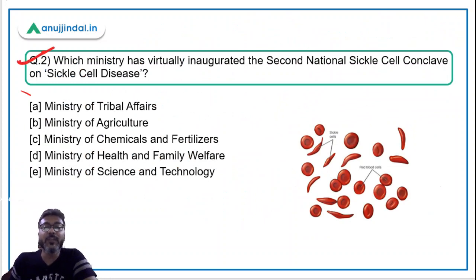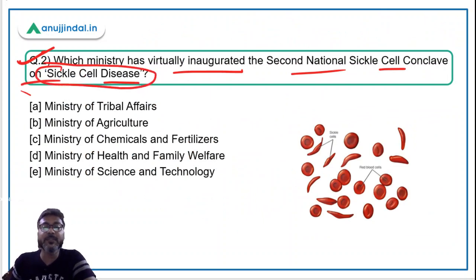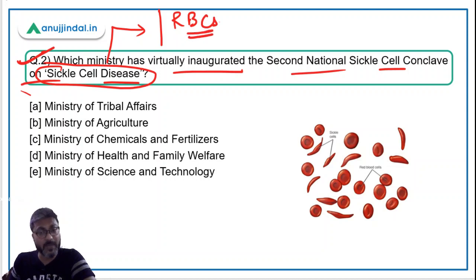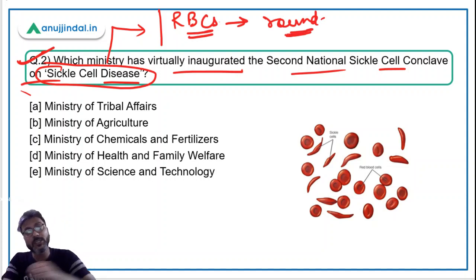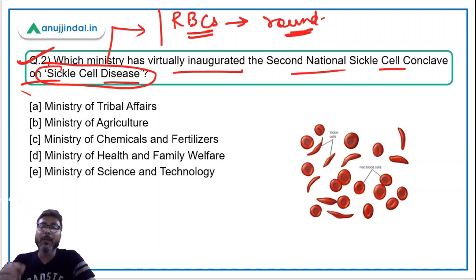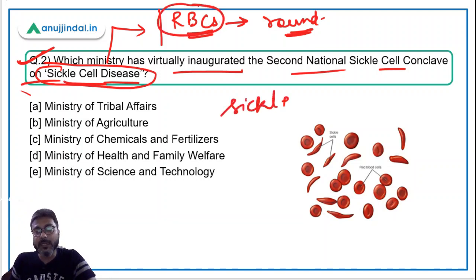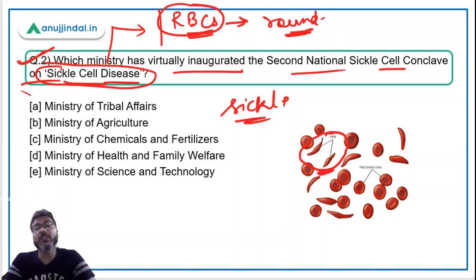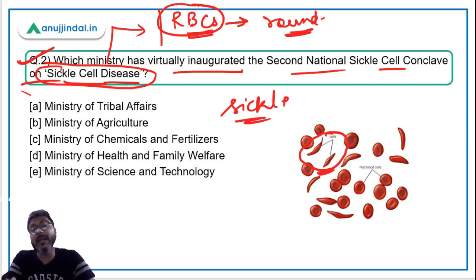Question number 2: which ministry has virtually inaugurated the second National Sickle Cell Conclave on sickle cell disease? Let's first understand sickle cell disease. We have RBCs — red blood cells — in our blood, which are generally round in shape and provide oxygen to all parts of the body through blood vessels. However, in a person with sickle cell disease, the RBCs take the shape of a sickle. The RBCs then die and there is a continuous oxygen shortage in the body.